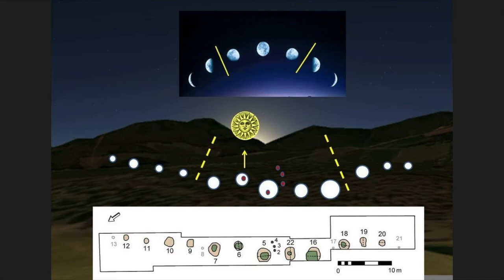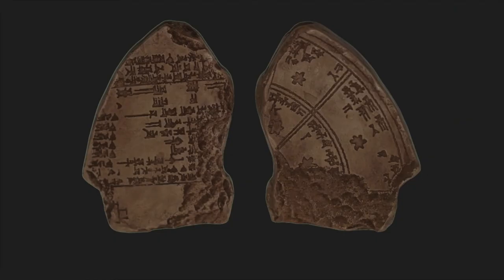We don't know why they did this - it could have been to hunt, it could have been for social meetings. It should be noted that there is a difference between acknowledging the passing of time and setting up an actual calendrical system. The first known actual written-down calendrical system was the Babylonian lunar calendar in 3000 BCE.